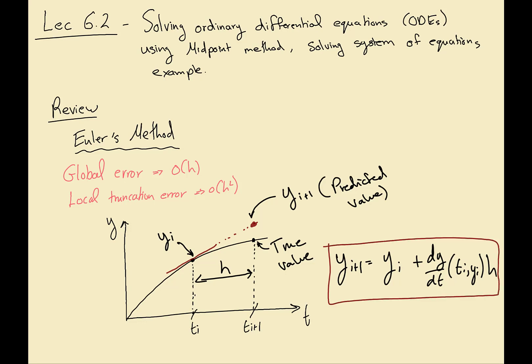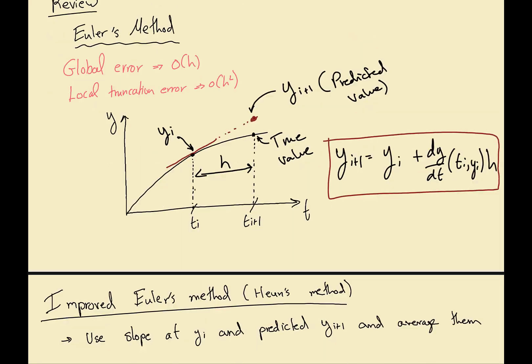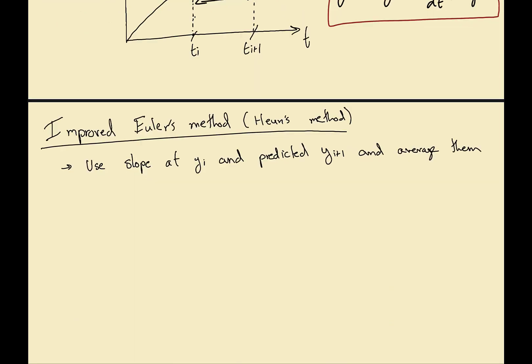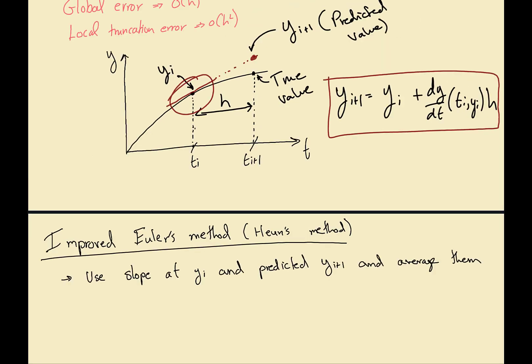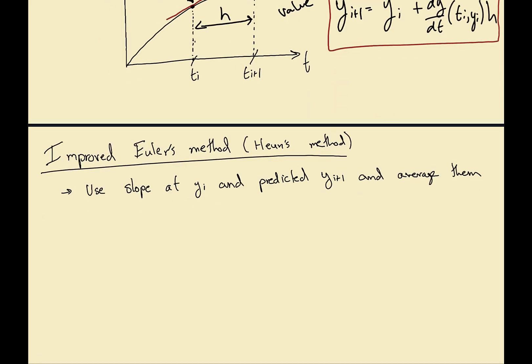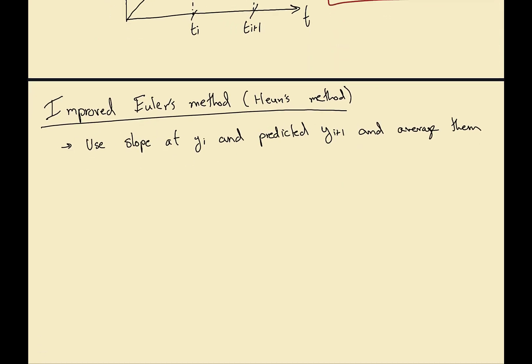Then we looked at the improved Euler's method, which uses the slope right at yi and another slope at yi+1, and then takes the average between the two. That average slope is used as our assumed slope between the two points.